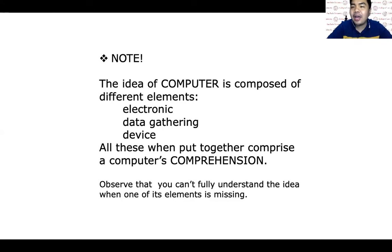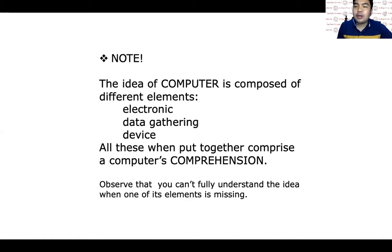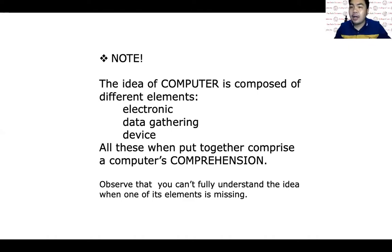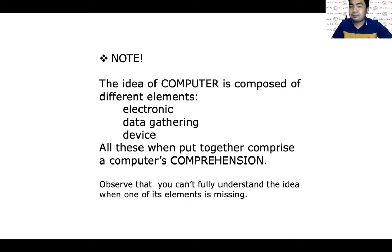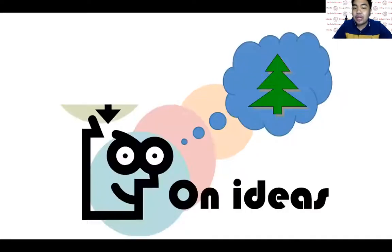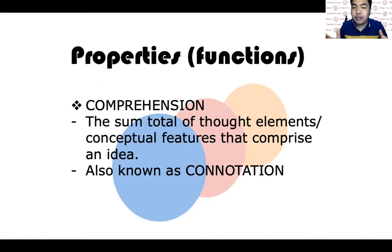So it would no longer be a computer, because an electronic device can refer to many other things — for example, a cell phone, a study lamp, an electric fan, a refrigerator. All of these are electronic devices. But when you add these elements together — electronic data gathering device — you will know that it's a computer. These are the elements of a computer, and that is what we call comprehension: the sum total of thought elements or conceptual features that comprise an idea.